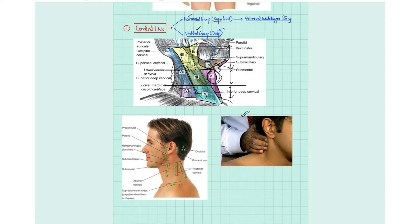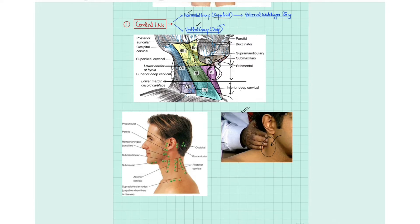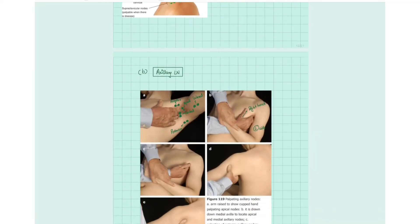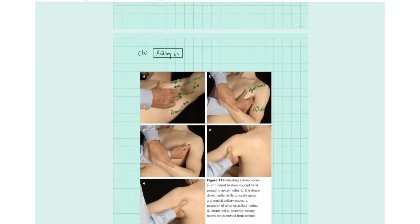To palpate the cervical lymph nodes, you stand behind the patient and palpate for the lymph nodes. On the side you are palpating, you ask the patient to bend the neck toward that side so that the muscle and fascia get relaxed, allowing you to palpate the lymph nodes properly.